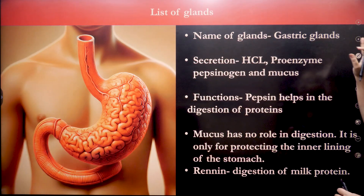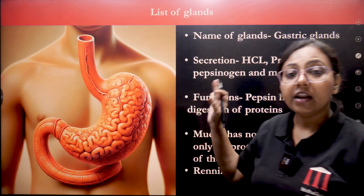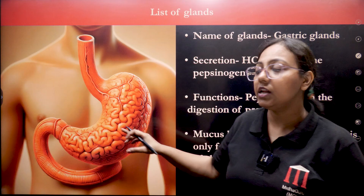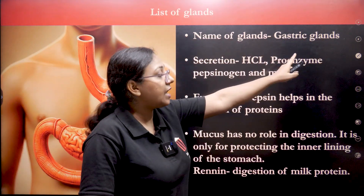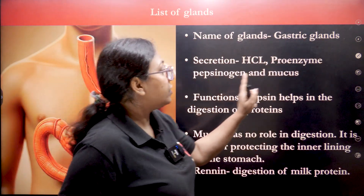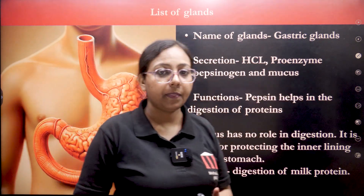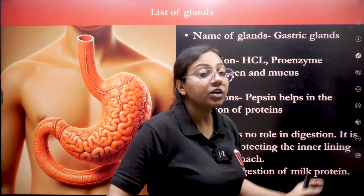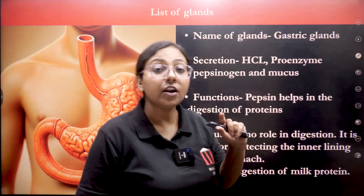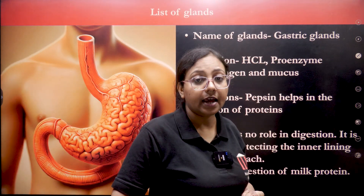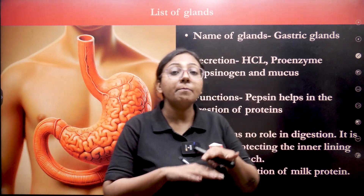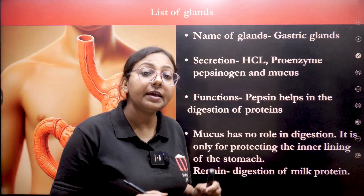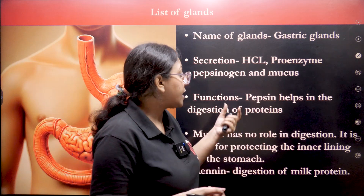The next gland is the gastric gland. This gastric gland is inside your stomach — the stomach is a J-shaped organ, not a gland itself, but inside it there are gastric glands which secrete the pro-enzyme pepsinogen. The stomach also secretes HCl and mucus. HCl has the role of making the medium acidic.